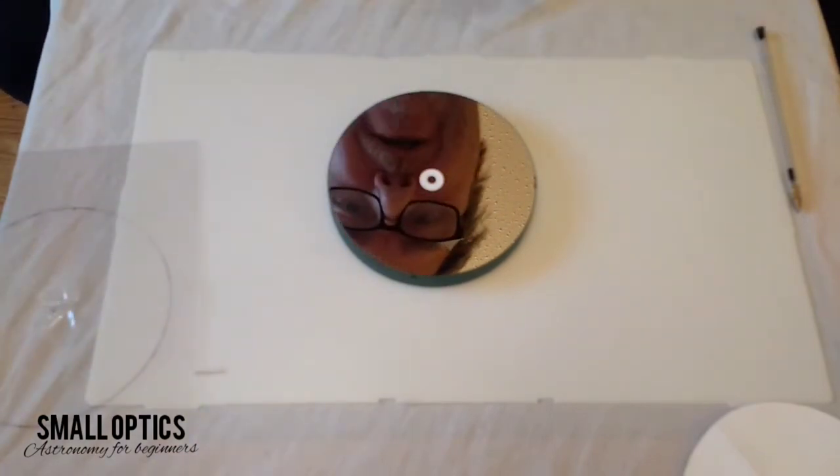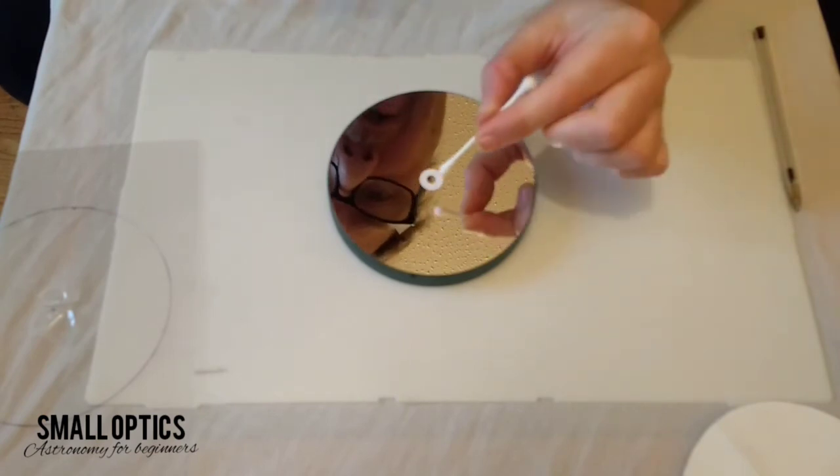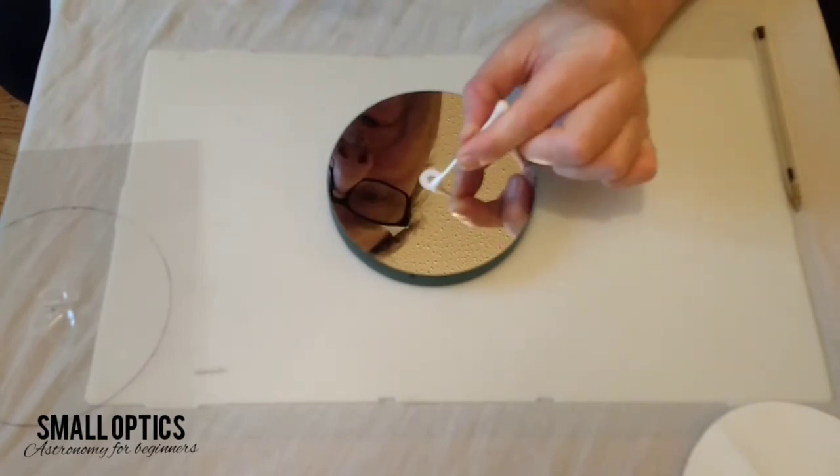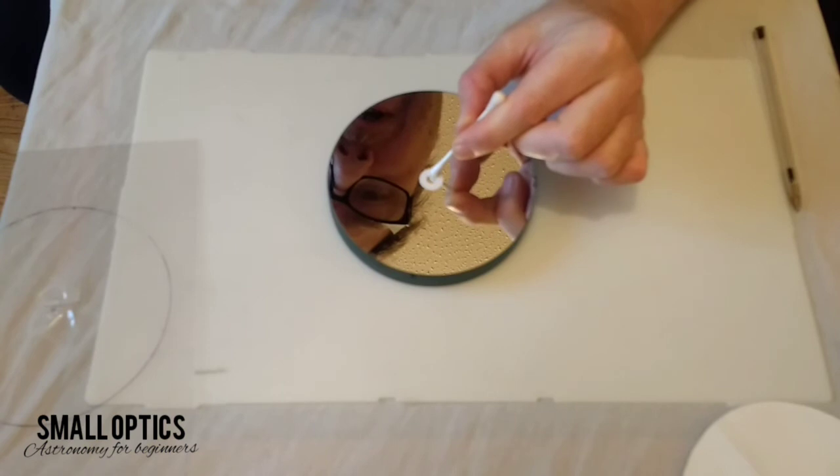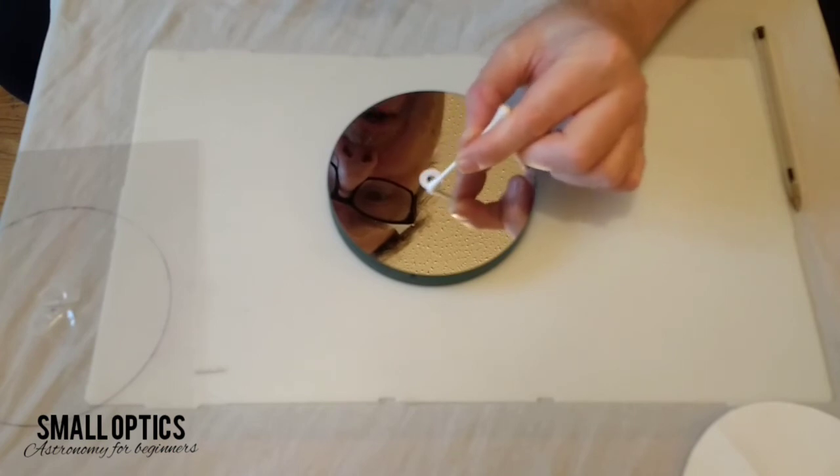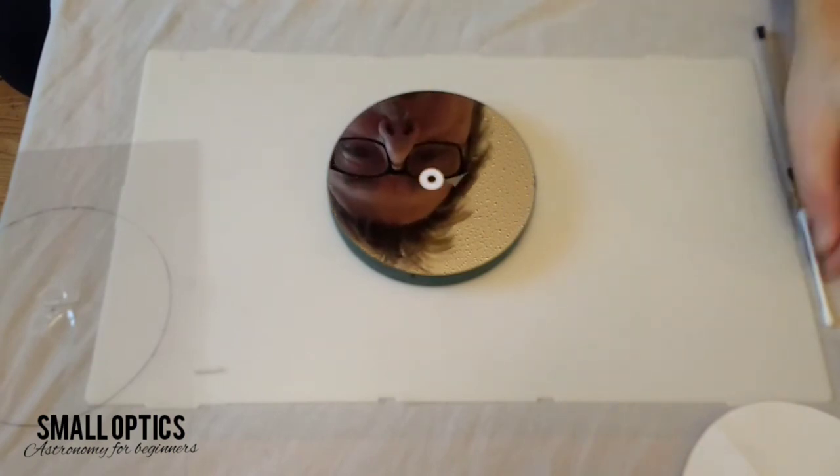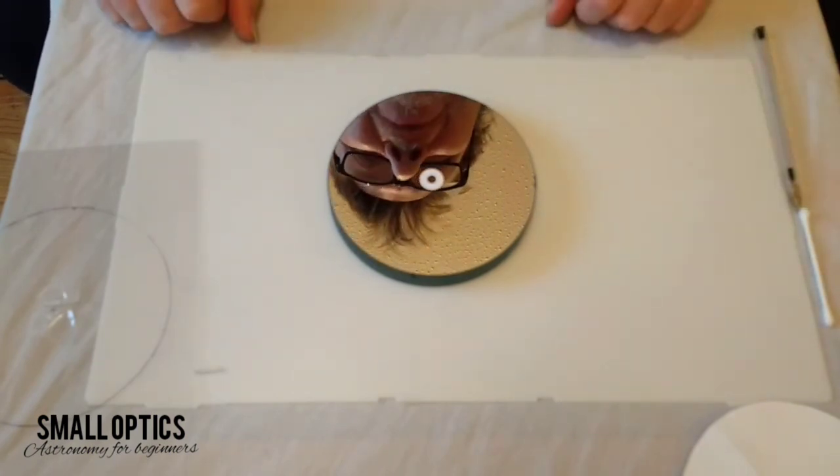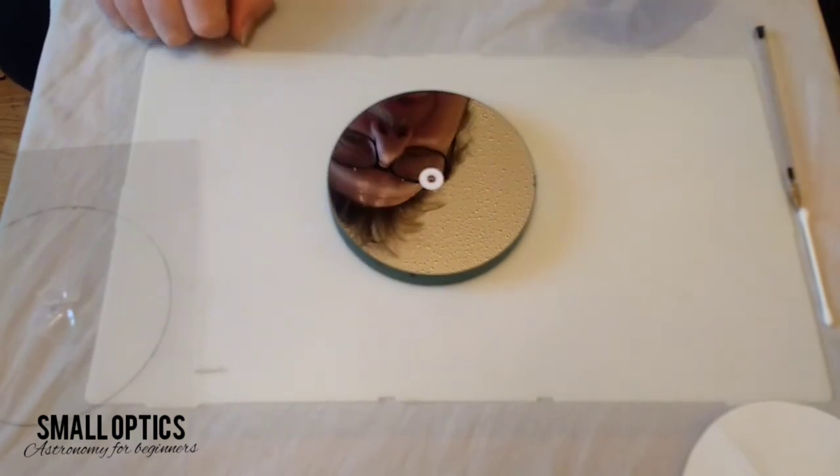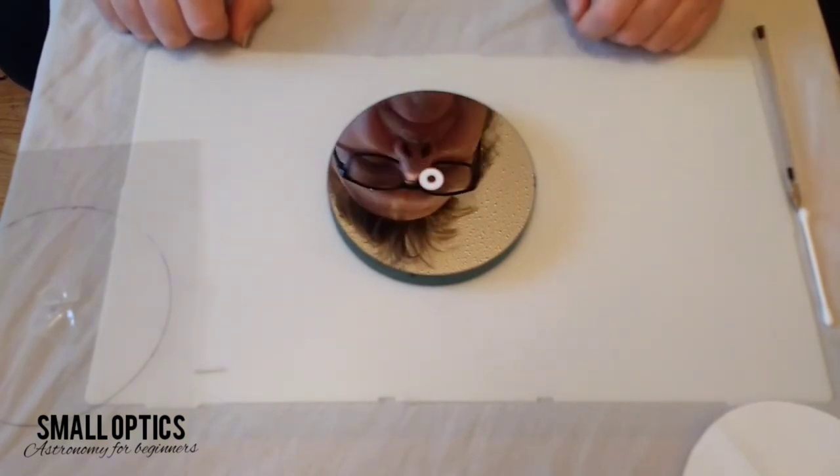That is a center-spotted mirror. Now with your cotton bud, one of these little things, it's advisable now just to go around it and just make sure that it's well stuck onto your mirror like that. And there you go. If you've got this far and you've followed the video, you've now put a center spot on your mirror, not in your mirror.